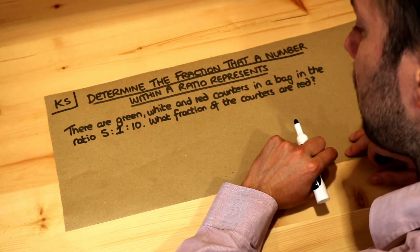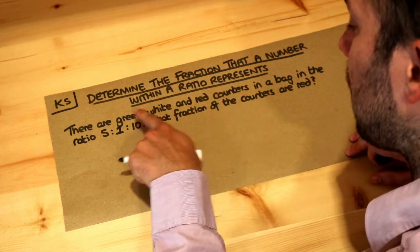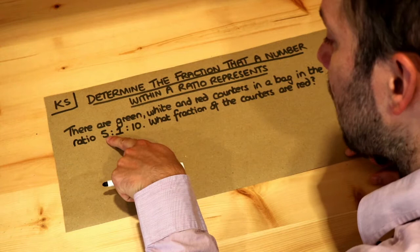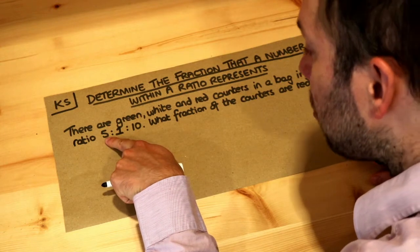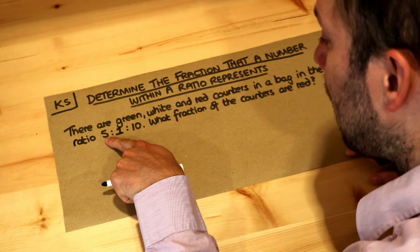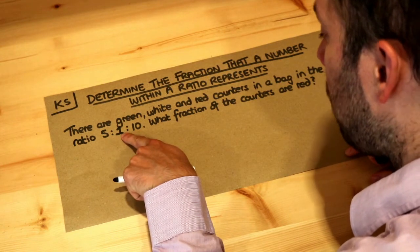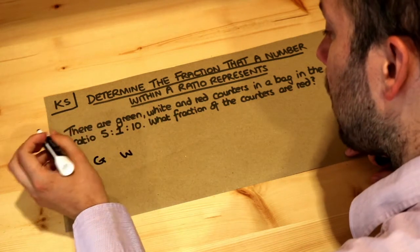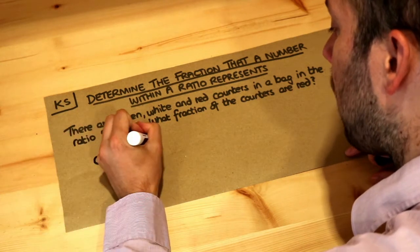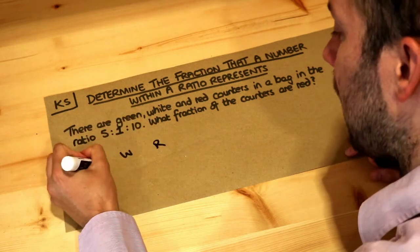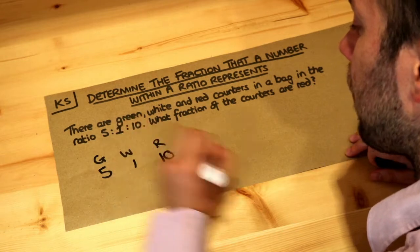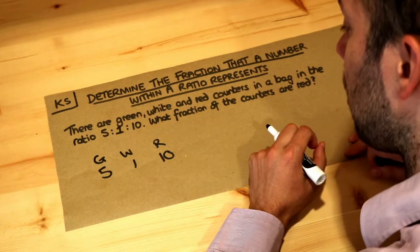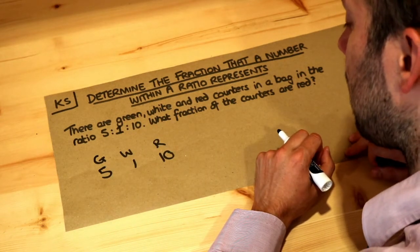Now remember what ratios actually mean. If it's the ratio of green to white to red, we're saying that for each five green counters we have, we have one white and 10 red. And we could actually say the number of green, white and red counters we had is 5, 1 and 10, because that would certainly be in the ratio 5 to 1 to 10.